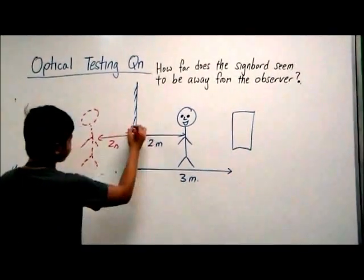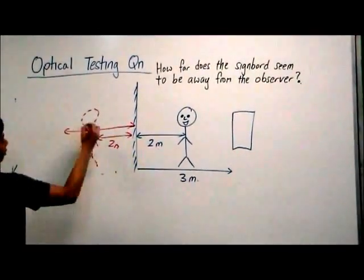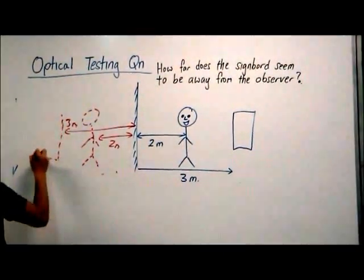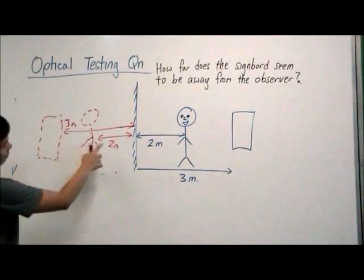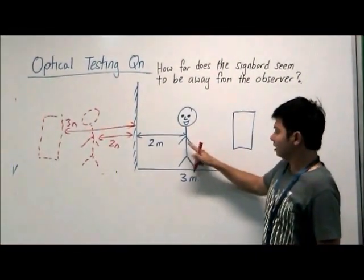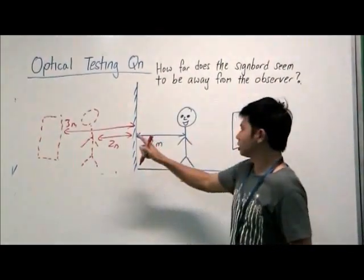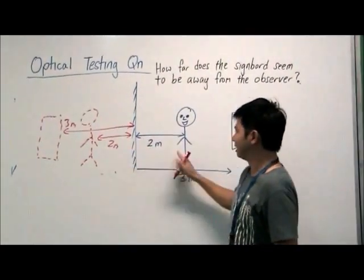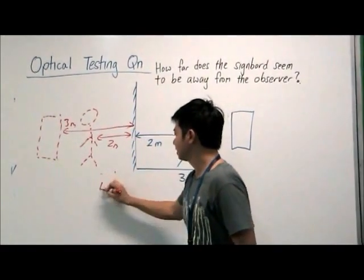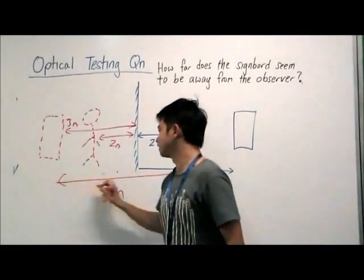The signboard will look as if it is 3 meters away from the mirror. So when the observer looks in the mirror and sees the image, the image looks as if it is 2 meters plus 3 meters — that is 5 meters away from the observer.